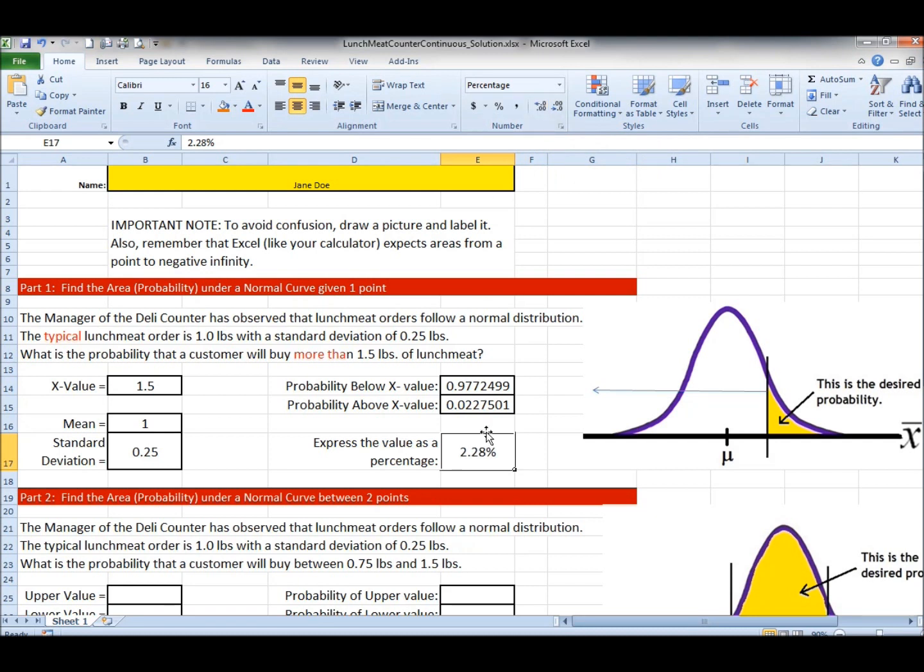Naturally another way is simply to multiply the number by a hundred. So now we know that the probability that a lunch meat order will be greater than 1.5 pounds is only 2.28 percent as represented in this yellow area. I hope this helps and I hope that you find Excel a useful tool.